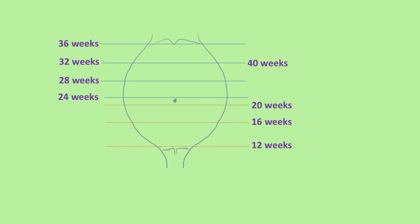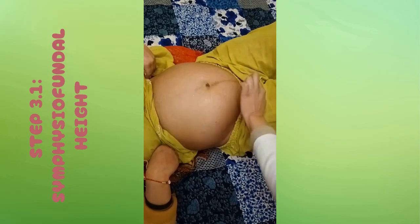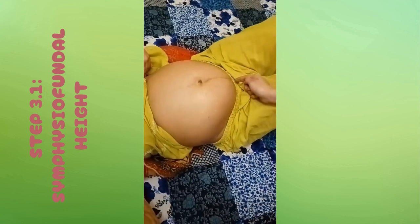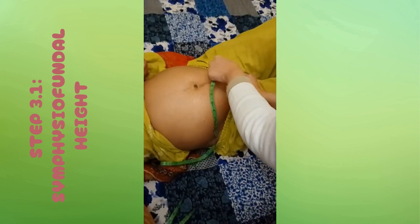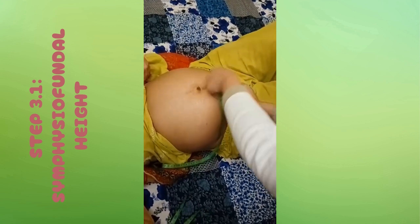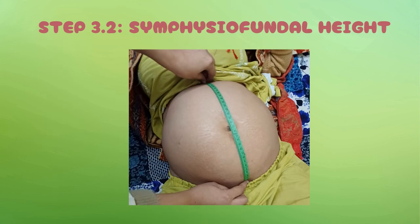After 36 weeks, as the baby's head descends into the pelvis, the fundal height begins to drop — by 40 weeks it's around the same level as at 32 weeks. Symphysio-fundal height (SFH) is the distance between the upper border of the symphysis pubis and the highest level of the fundus. Place the zero mark of the tape at the symphysis pubis, run it along the midline to the marked fundal point, and take the reading in centimeters. After 20 weeks, SFH approximates gestational age in weeks until 36 weeks.